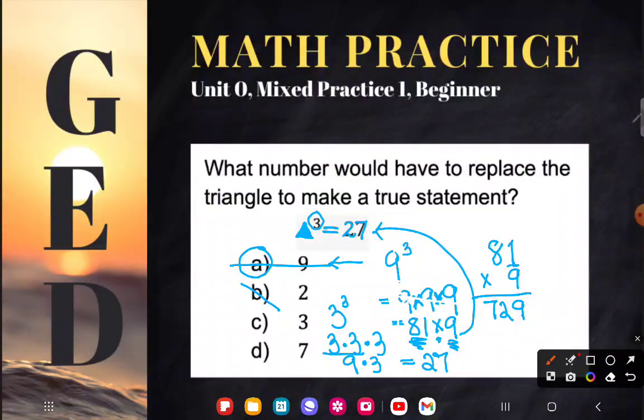So what number could I replace the triangle with? Well, I could replace it with three. Three cubed is equal to 27. That would give me a true statement. C is the correct answer.